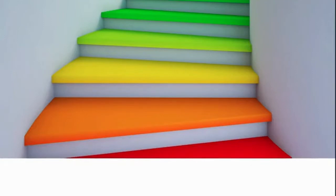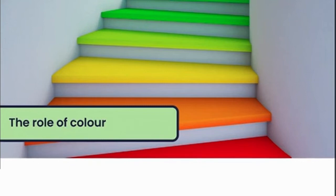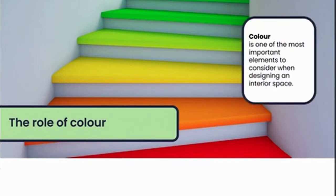Let's look at the role of color. As designers, one of our core design guidelines is to design around the function and primary use of the space we're working on. Color is one of the most important elements to consider when designing an interior space — not only because it adds aesthetic value, but because it plays a huge role when it comes to functionality within the space. Can you tell me why color assists the function of a space? Pop your answers into your Morpheus text box.